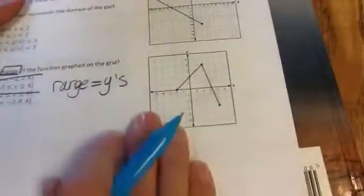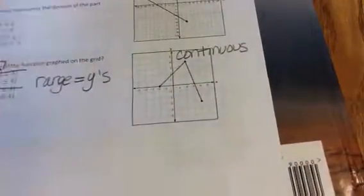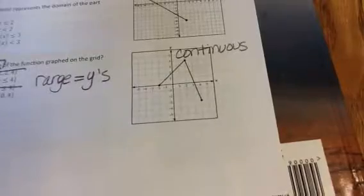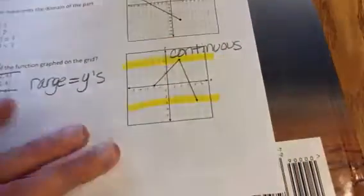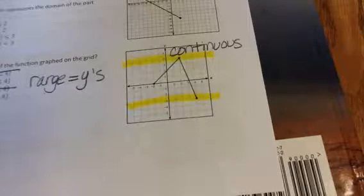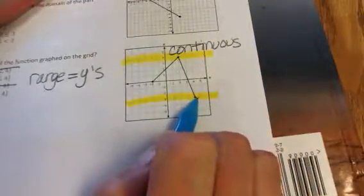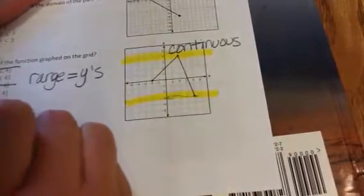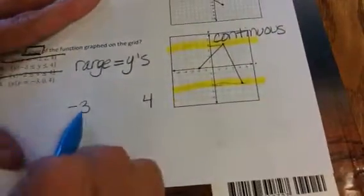Now, looking at this graph — is it continuous or discrete? This is a continuous graph because the dots are connected. For a continuous graph, I go from the very bottom for the range to the very top of the whole graph. The middle doesn't matter; it only matters about the very bottom and the very top. The number at the very bottom is negative 3, and the number at the very top is 4. So it's continuous, so I put negative 3 and 4 with a y in the middle.